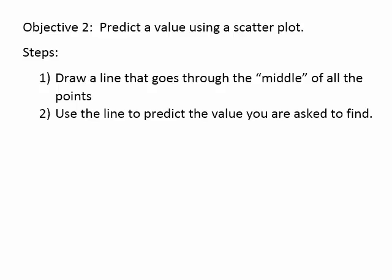We're now on to our second objective: predicting a value using a scatter plot. We have two steps. The first step is to draw a line that goes through the middle of all the points on the scatter plot. The second step is to use the line you drew to predict the value you're asked to find.